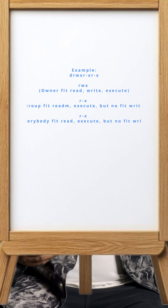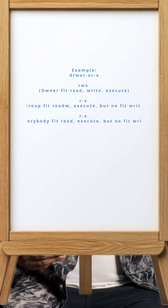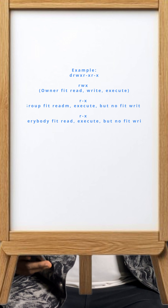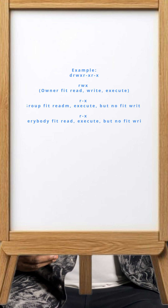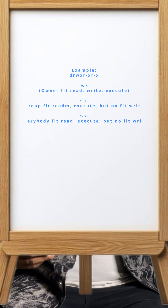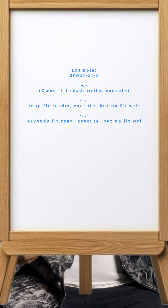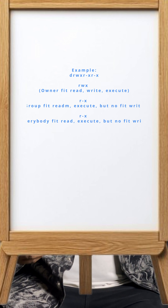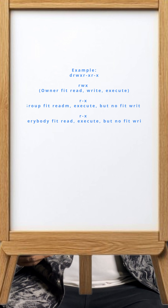For example, r w x means the owner can read, write, and execute. The r is for read, the w is for write, and the x is for execute. Then if you see the next three as r dash x, that is for the group or team — it means the group can read and execute but they cannot write. That is why you see the dash after the r — r dash x.